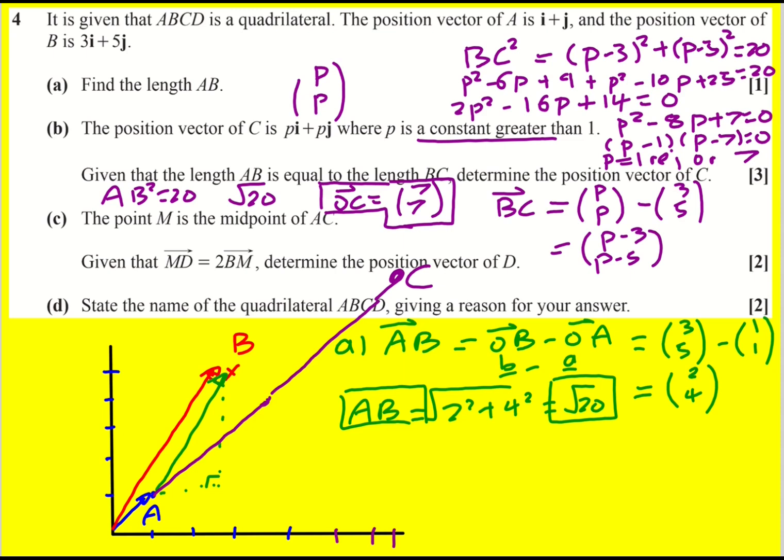We're told that m is the midpoint of AC. Let me put it here. Might just change the colour actually. Now it's given that md is equal to 2bm. We're asked to determine the position vector of d. So let's first of all work out what AC is. That's going to be 7, 7 minus 1, 1. It's going to give me 6, 6. And because m is the midpoint, that means AM is going to be a half of that. It's going to be 3, 3.